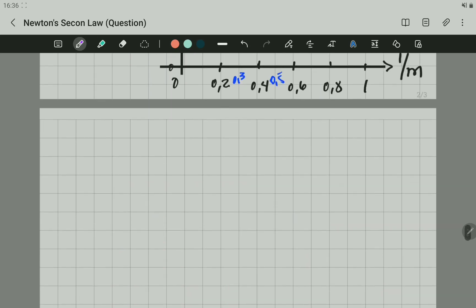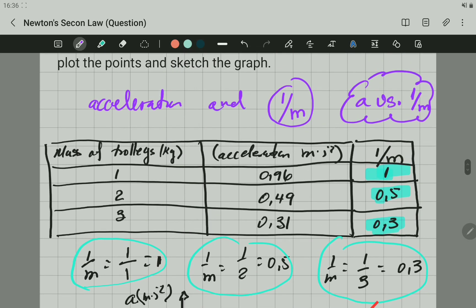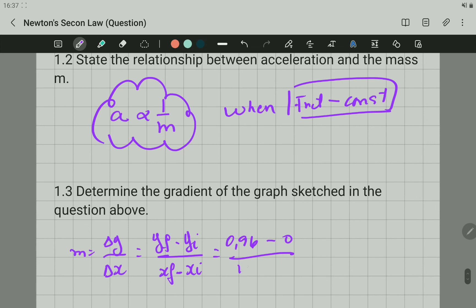And then for the x, the other point is 1 and 0. It is 1 and 0. And when you do the calculation, the answer is 0.96 kilograms meters per second squared. But the unit is not important right now. They say determine the gradient of the graph. So the gradient of the graph is just this answer here.